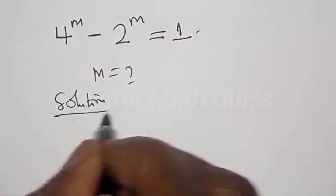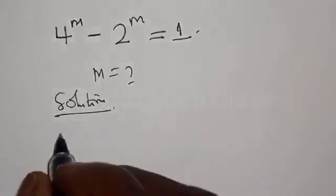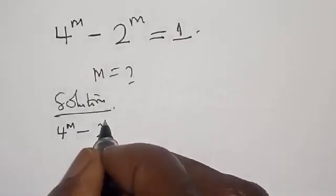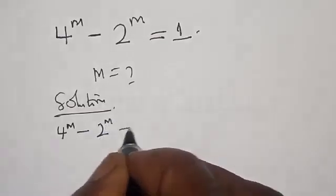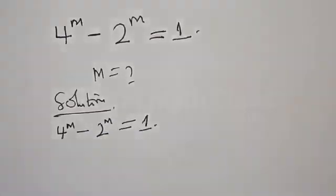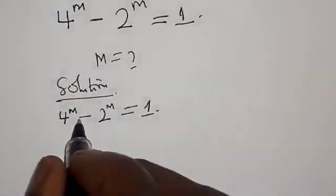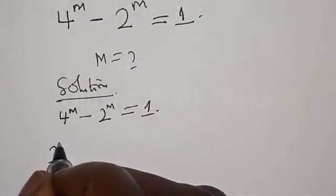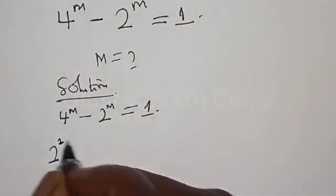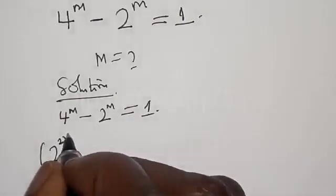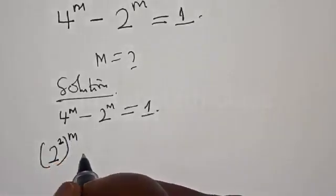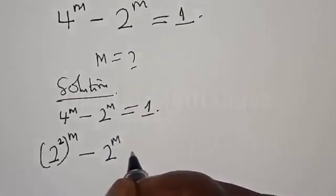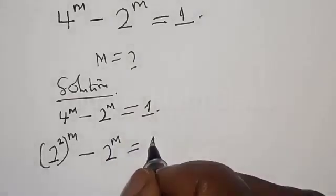Solution. We have 4 raised to power m minus 2 raised to power m equal to 1. Then 4 raised to power m can be expressed as 2 raised to power 2, raised to power m, minus 2 raised to power m equal to 1.